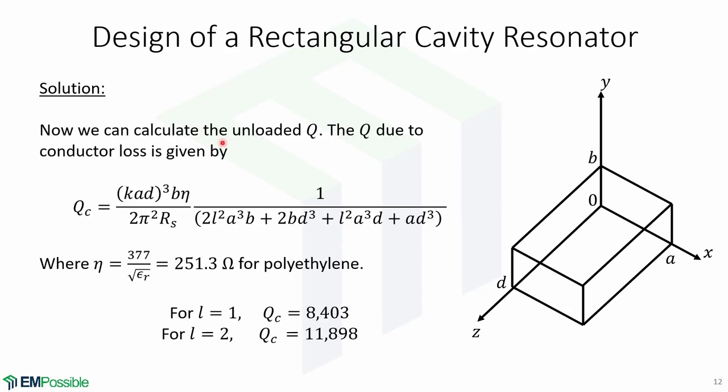Now we are ready to calculate the unloaded Q. We first calculate the Q due to conductor loss, given by this long expression, where η is given by 377 over square root of εr for polyethylene. For l equals 1, the Q due to conductor loss is 8403, and for l equals 2, it's equal to 11,898.